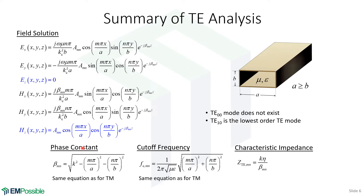Interestingly, the phase constant and cutoff frequency equations are the same for both TE and TM modes. The convention is that A is greater than B, and the wave guide is filled with some mu and epsilon, where A and B are the inside dimensions. For TE modes, the TE00 mode does not exist because both indices cannot be zero simultaneously. The lowest order TE mode is the TE10.